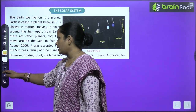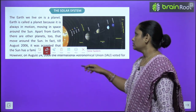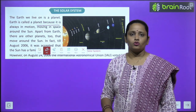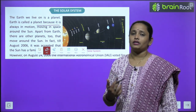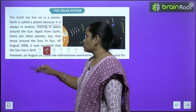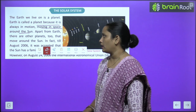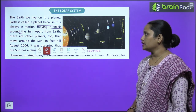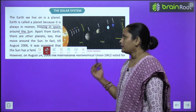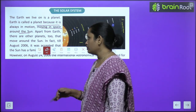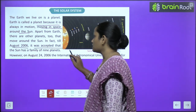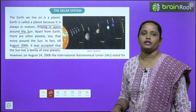Earth is called a planet because it is always in motion. In fact, till August 2006, it was accepted that the sun has a family of nine planets.